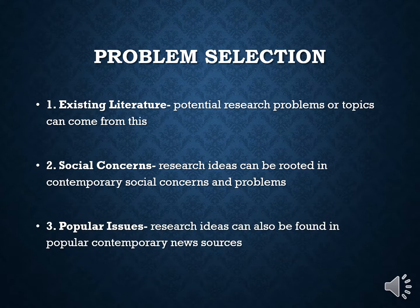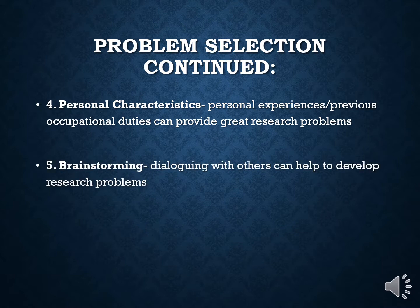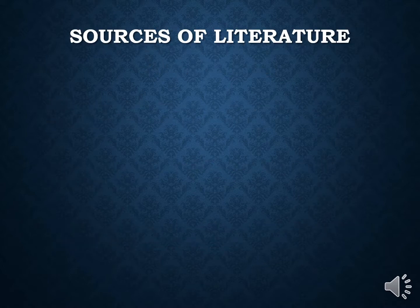Popular issues and research ideas can also be found in popular contemporary news sources. From problem selection, we continue by looking at personal characteristics, which include personal experiences and previous occupational duties that can provide great research problems. Brainstorming is another area where dialogue with others can help develop research problems. Practitioners can usually provide problems that are needing help and won't be solved. In each of these areas, we're able to begin our foundational development of creating a research question.